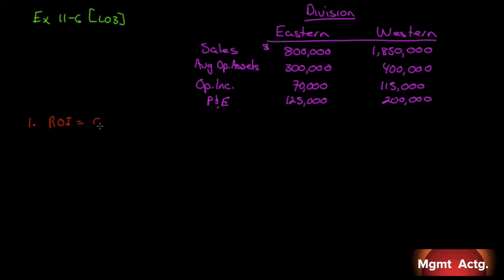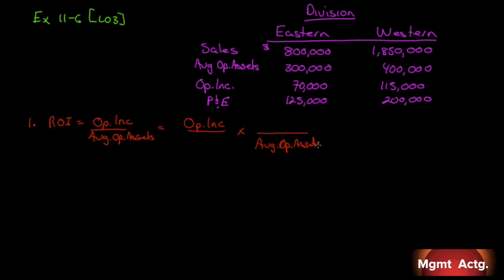Let's derive that first. Our ROI is operating income over average operating assets. To express it in terms of margin and turnover, we multiply numerator and denominator by the same value. We insert sales in both spots — operating income as a percentage of sales is margin, and sales divided by average operating assets is turnover. So ROI equals margin times turnover.